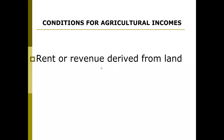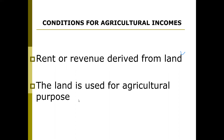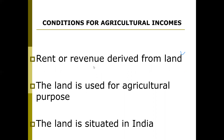You have to remember certain conditions for agricultural income. First, rent or revenue should be derived from agricultural land. Secondly, the land must be used for agricultural purpose — even though it is agricultural land, if agricultural activity is not done, it cannot be deemed as agricultural income. Thirdly, the land should be situated in India. If you have land in a foreign country and cultivate agriculture there, you have to pay tax.